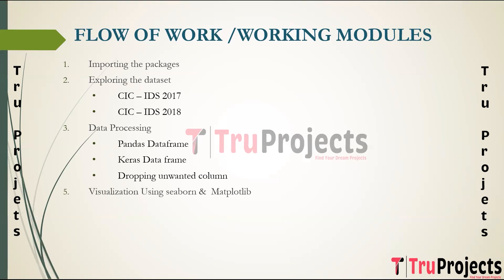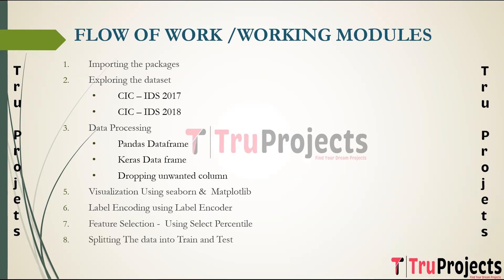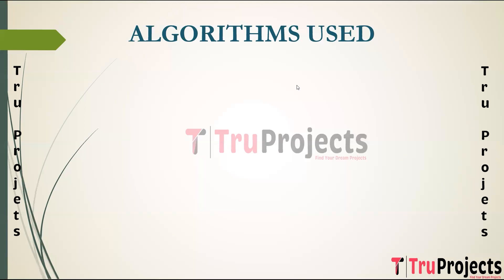Seaborn and Matplotlib are utilized for data visualization, creating various plots and charts to gain insights into the dataset's characteristics, distributions, and relationships between variables. Categorical variables are converted into numerical format using label encoding, which is crucial for machine learning models requiring numerical input. Feature selection is performed using SelectPercentile, which selects the top X percent of features based on statistical tests. The dataset is then split into training and test sets to evaluate how well the model generalizes to new, unseen data.